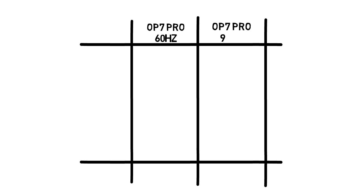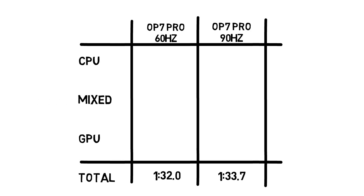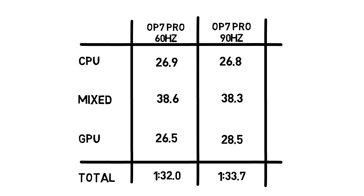Clearly the 60 hertz version won with a time of 1 minute 32 seconds, and then 1.7 seconds later came in the 90 hertz version at 1 minute 33.7. If you look at the CPU times, almost exactly the same — 26.9 versus 26.8. And a similar story in the mixed results: 38.6 compared to 38.3, so a very minor lead there by the 90 hertz version. But when we get into the GPU test — absolutely amazing — 26.5 by the 60 hertz version compared to 28.5 for the 90 hertz version. So it looks as if the 60 hertz version was able to complete that 3D gaming test faster.